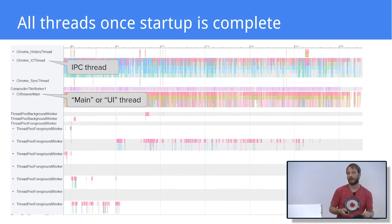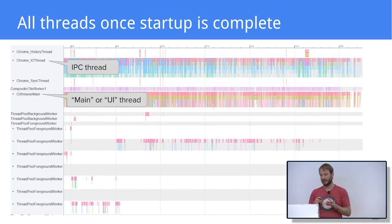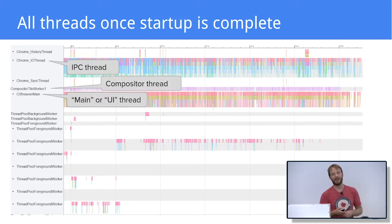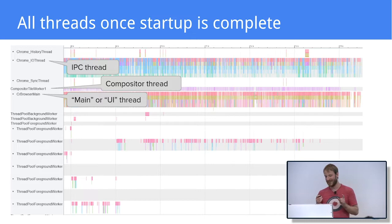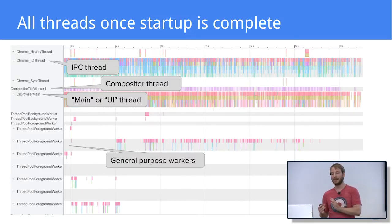Next, we have the IO thread, which is very poorly named because it is not where we perform disk operations. Instead, it is the thread where IPCs are received and sometimes sent. That thread performs very important work, but most Chrome developers don't know about its existence — it just works. After that, we have the compositor thread, which was described in the Life of a Pixel talk. And we have the thread pool threads, which are general-purpose threads that can be used for any task that doesn't have to run on one of the other threads.